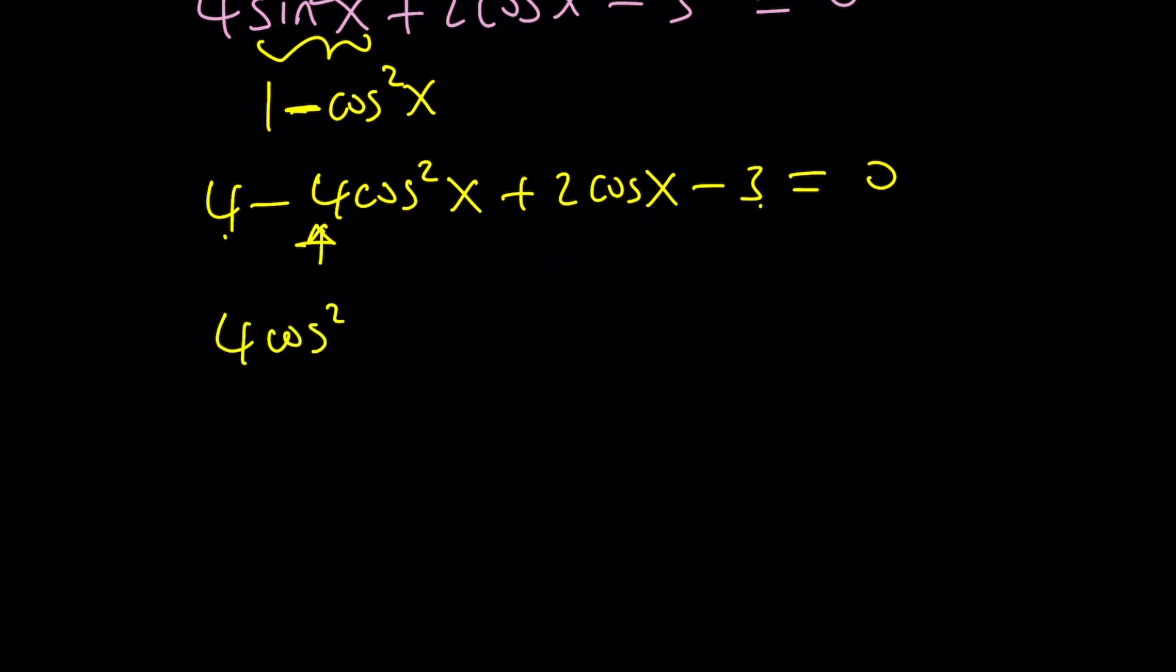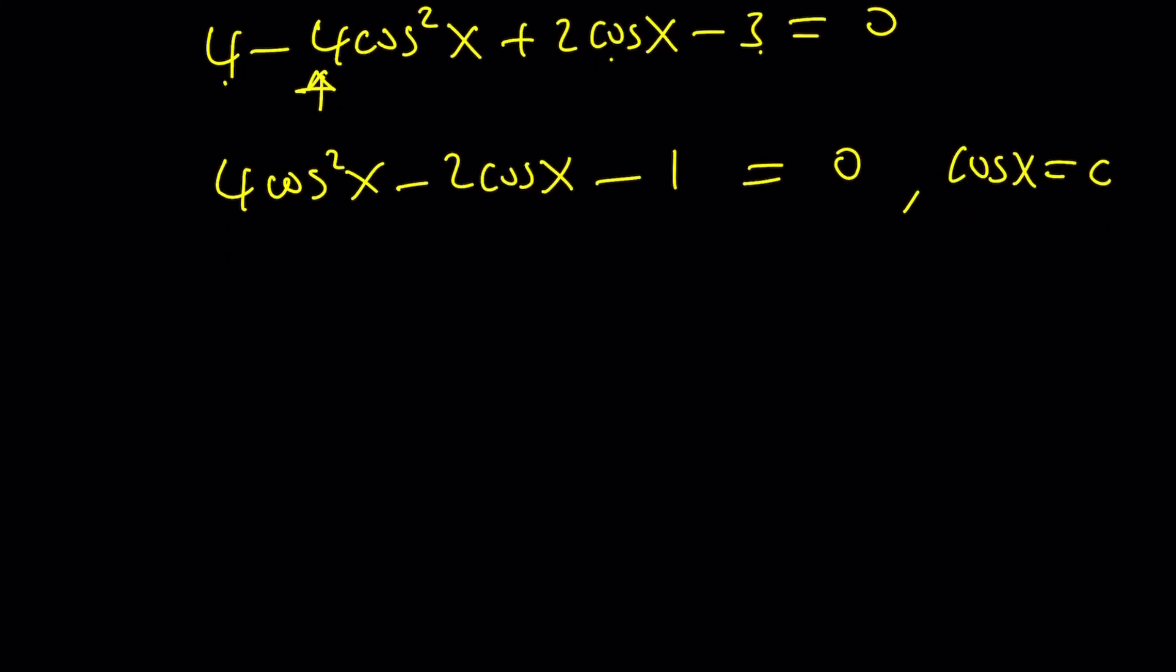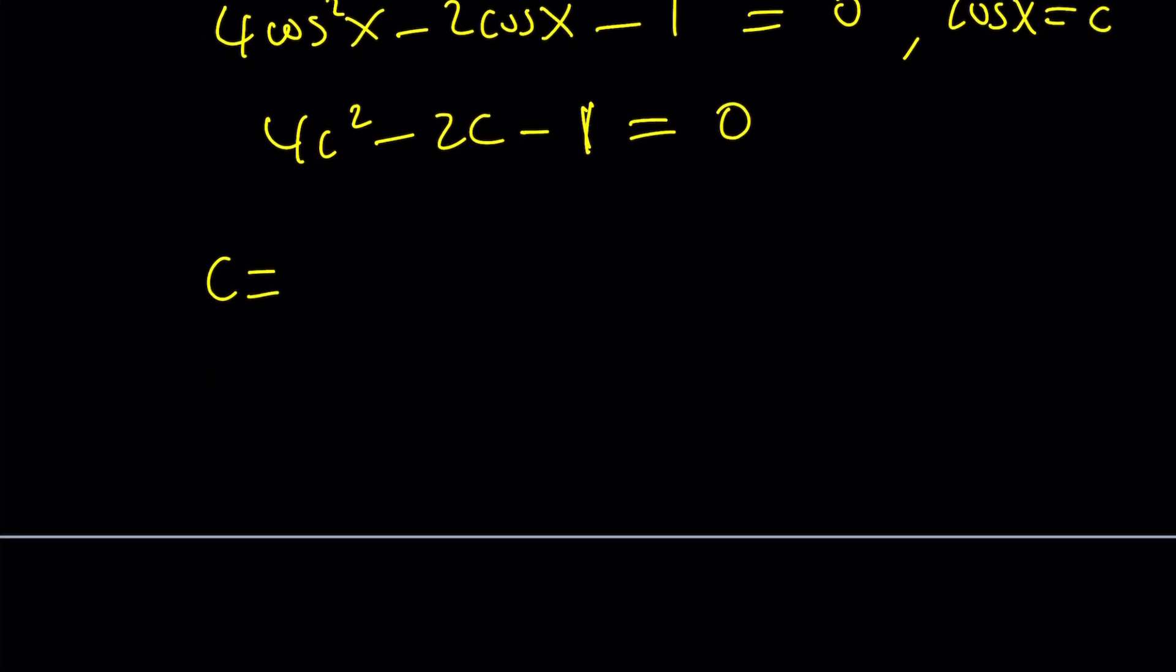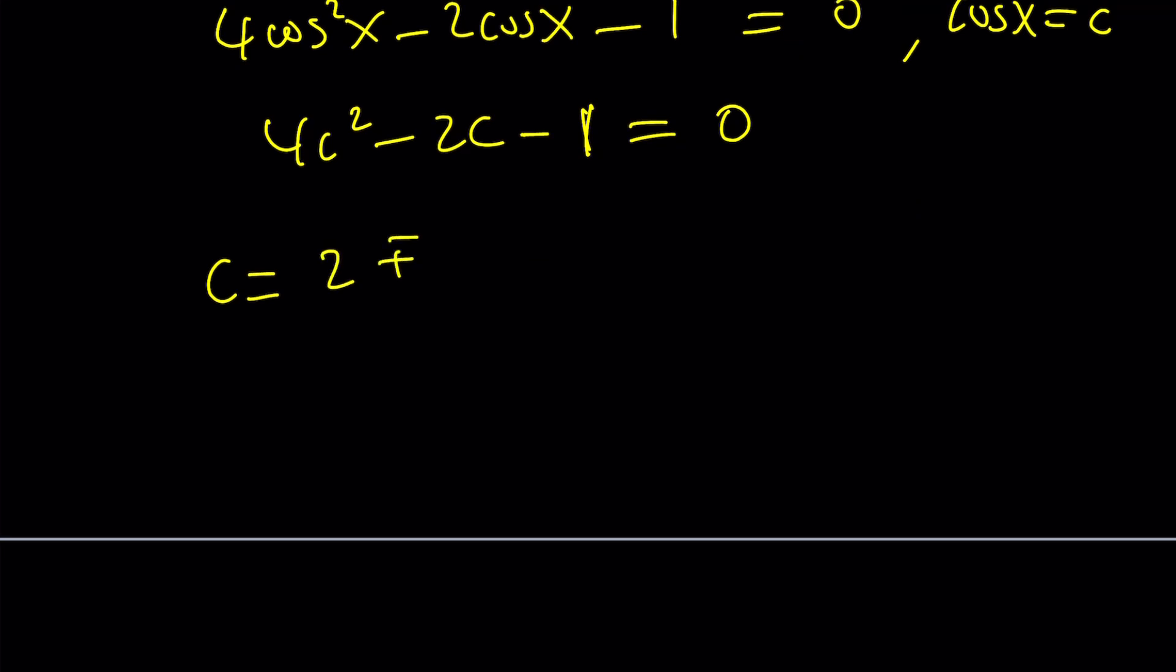This is not good because I have sin squared and cosine. But we have the Pythagorean theorem. We can replace sin squared with 1 minus cosine squared. If you distribute the 4, you get 4 minus 4 cosine squared x plus 2 cosine x minus 3 equals 0. Multiply both sides by negative 1. Set cosine x equal to c. Then you get 4c squared minus 2c minus 1 equals 0. If you solve this using the quadratic formula, you get (2 ± √20) / 8, which simplifies to (1 ± √5) / 4.